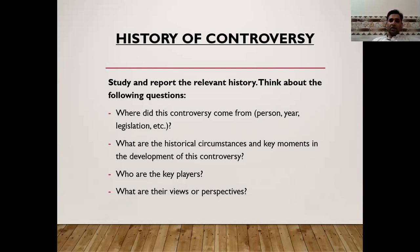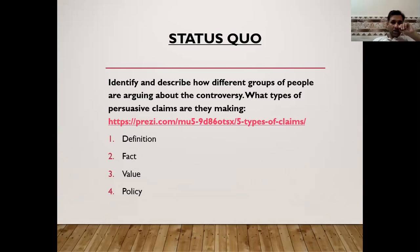Status quo refers to the current state of affairs and how we challenge or question the people in power. In the status quo section, you have to identify the claims. Remember the class in which we covered different types of claims — there were four major types: definition, factual, value, and policy. A definition claim is relevant to definitions; factual is related to facts; value relates to value systems that affect every human being; and policy claims are related to policy and legislature. You can also revisit the Prezi presentation I shared with you for a refresher.